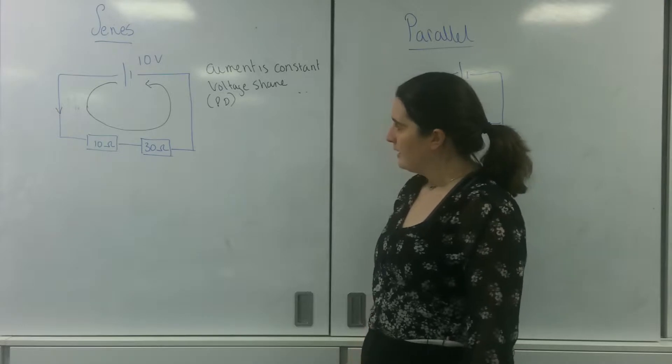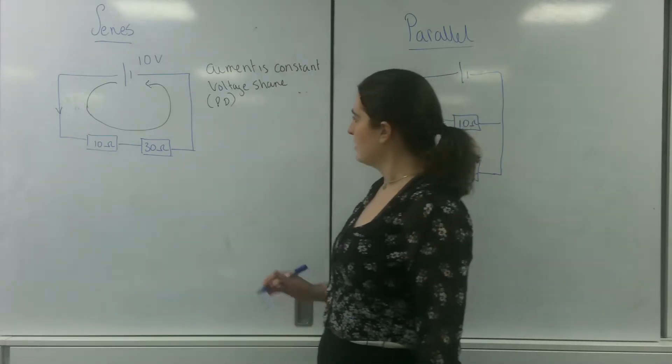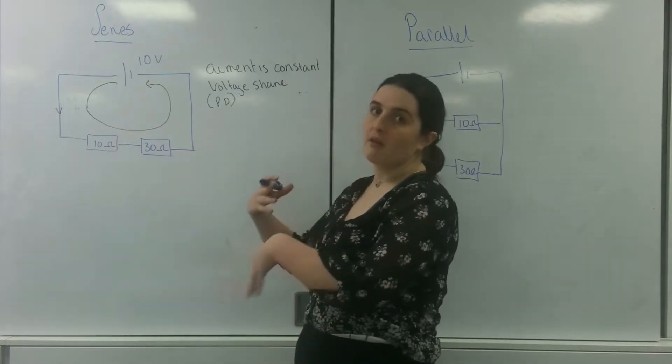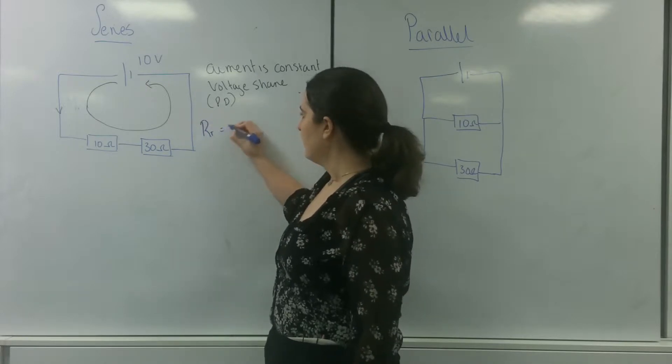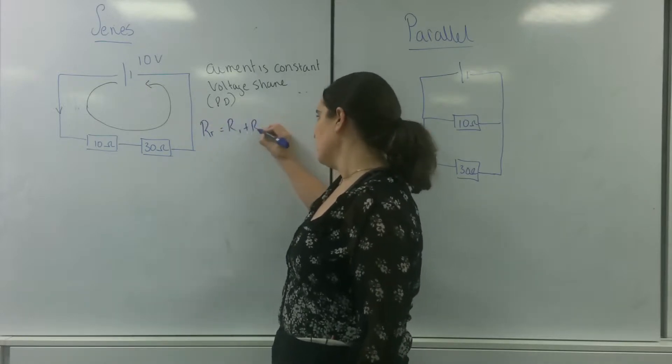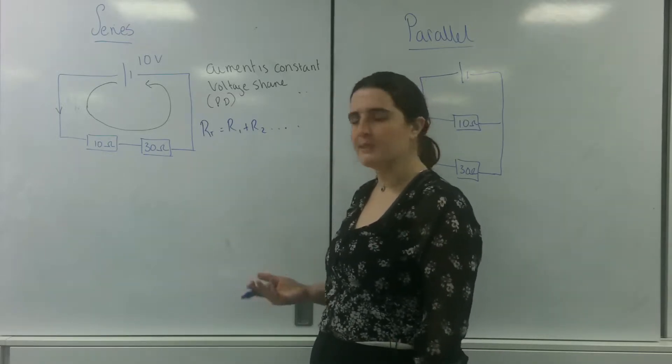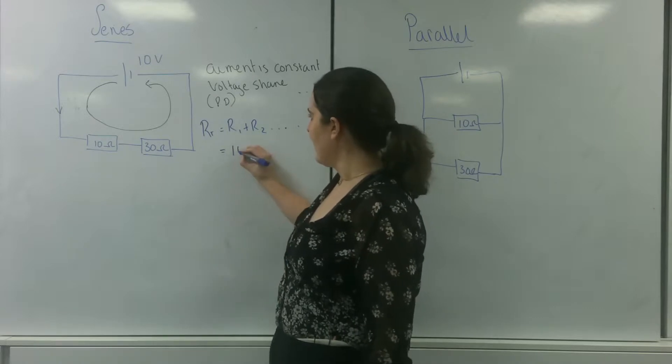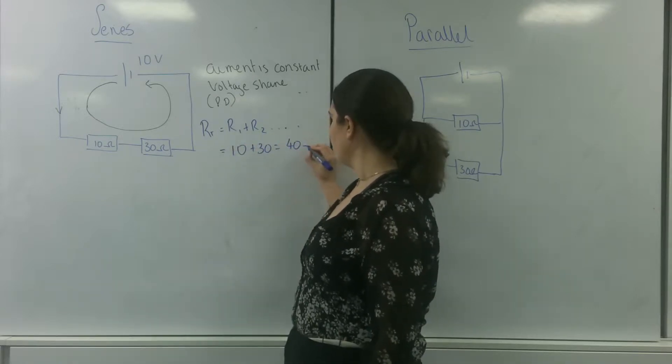So I need to find the total resistance of this. So since these are in series these are both affecting the current together. Therefore the total resistance is R1 plus R2, keeps going on depending on how many resistors you have. You just add them together. So in this case it is 10 plus 30 which is 40 ohms.